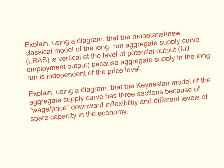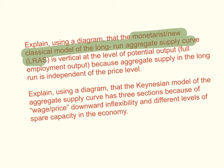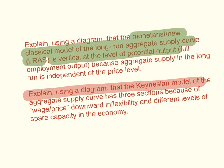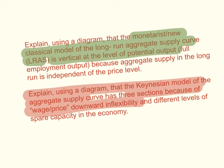The learning outcomes for this specific video are: number one, to explain, using a diagram, that the monetarist or new classical model of the long-run aggregate supply curve is vertical at the level of potential output. And then we're going to explain, using a diagram, that the Keynesian model of the aggregate supply has three sections because of wage-price downward inflexibility.